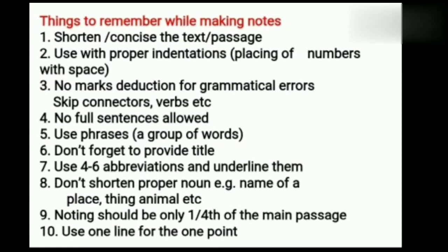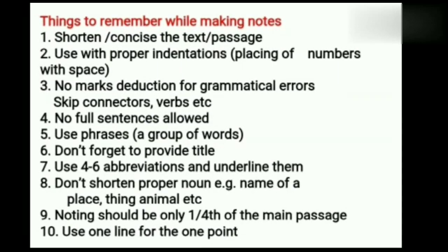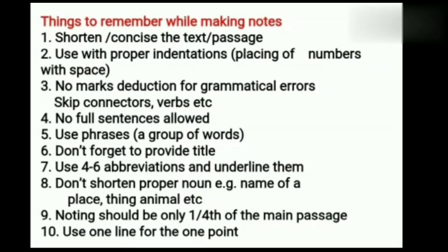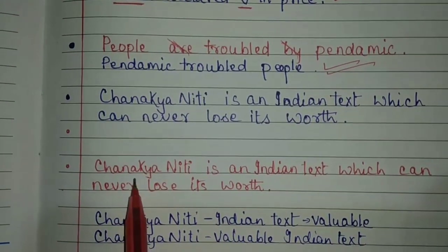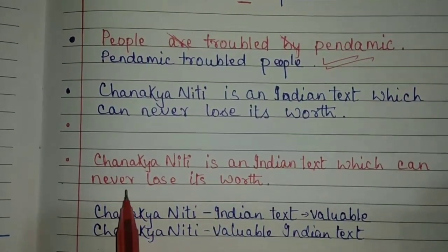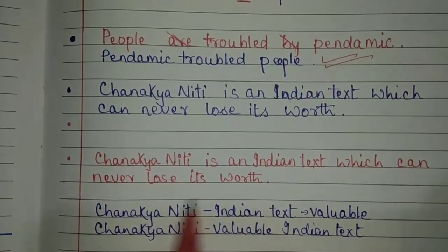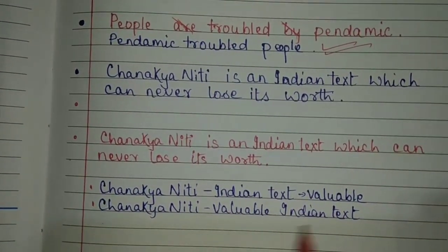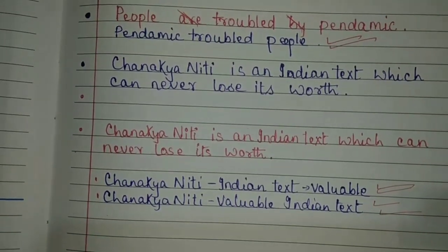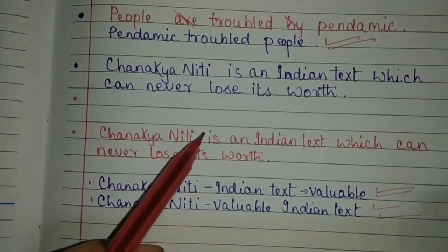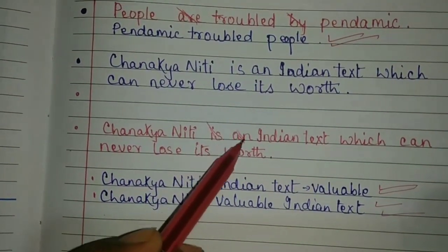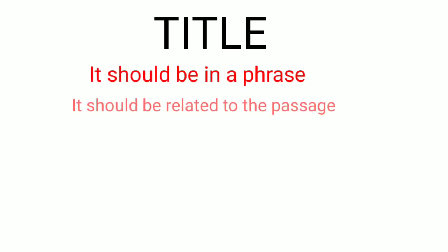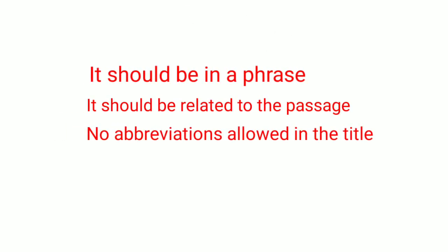Point number four — put an asterisk mark on this: no full sentences are allowed in note making. You have to take help of phrases or use extremely short lines. Point number five: use phrases, which are a group of words. Point number six: don't forget to provide a title. If you don't provide a title, you will not get the one mark allotted for it.